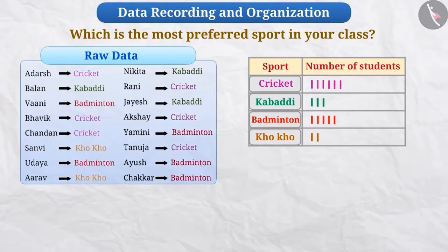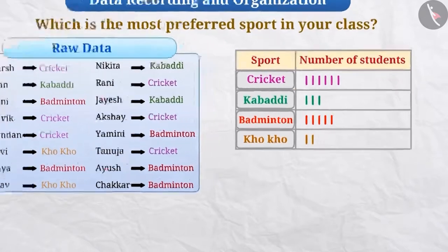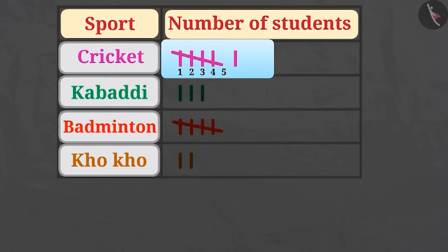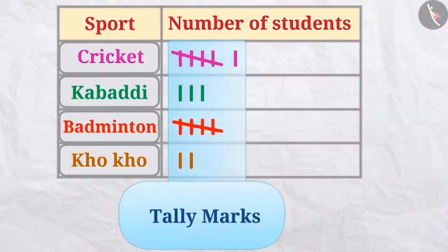Now look at this. We may have difficulty counting these lines. To make it easier, we make groups of vertical lines. Generally, groups of 5 lines are easier to understand, so we make groups of 5. For simplicity, we use the 5th count as a slanting line. We call these signs tally marks.